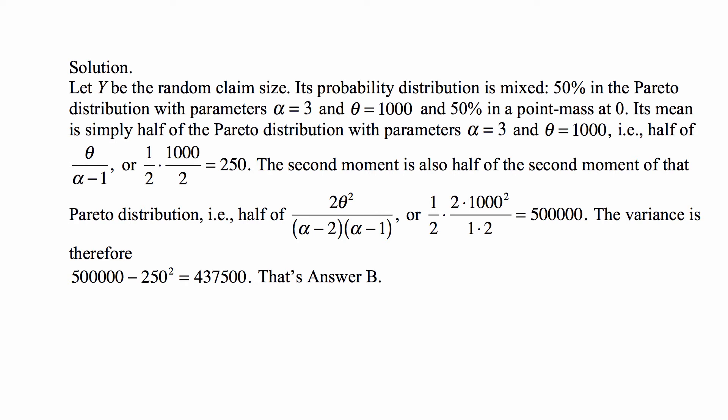The important thing to remember about mixed distributions is that the moments are the weighted averages of the moments of the distributions that the mixed one is built from. The point mass at 0 has first moment of 0 and second moment of 0. The second moment of this distribution is also half of the second moment of the Pareto distribution, and that's half of 2θ²/[(α-2)(α-1)].